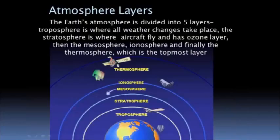The atmosphere is divided into many layers, mainly 5. The troposphere, stratosphere, mesosphere, ionosphere and the thermosphere. The troposphere is where all weather changes take place. The stratosphere is where the aircrafts fly and has the ozone layer. Then comes the mesosphere, ionosphere and finally the thermosphere which is the topmost layer.